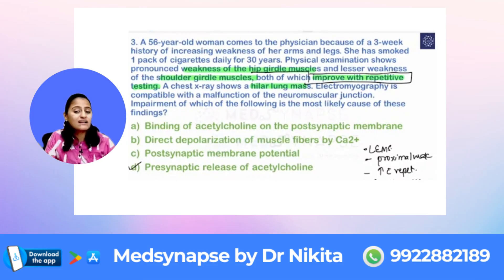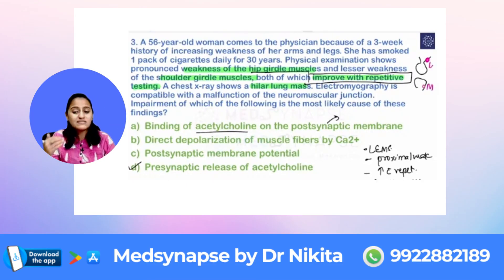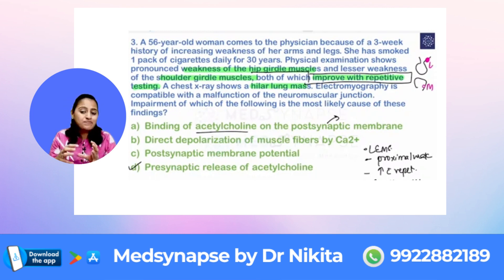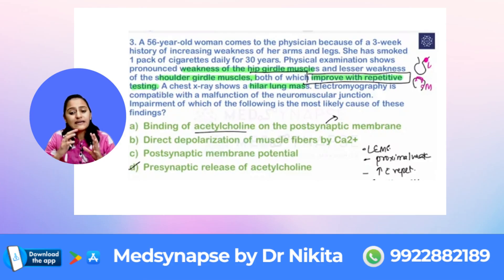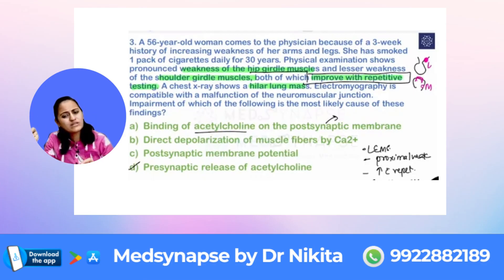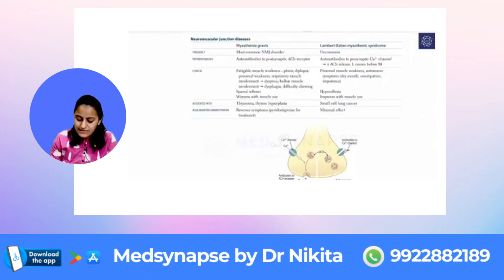With myasthenia gravis the correct option would have been binding of acetylcholine on the post-synaptic membrane. In Lambert-Eaton the problem is pre-synaptic — remember L comes before M, so pre-synaptic is Lambert-Eaton and post-synaptic is myasthenia. In Lambert-Eaton, pre-synaptic voltage-gated calcium channels are affected, so depolarization doesn't happen and the neurotransmitter is not released — it's a problem with the release of acetylcholine. In myasthenia gravis, weakness increases with exercise and worsens in the evening.